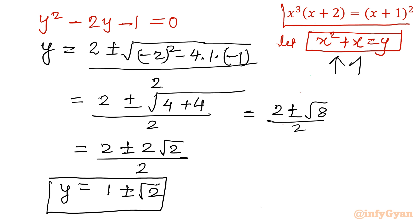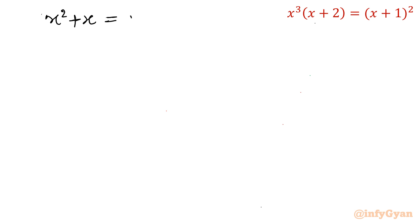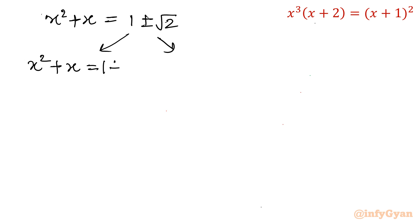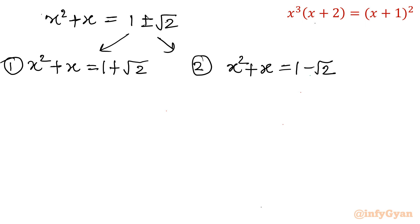Now remember what our y is — y is our substitution x² + x. So in place of y I will put x² + x, and that value is 1 plus minus root 2. I will split this into two quadratic equations and from there we will get 4 solutions. Equation 1: x² + x equal to 1 plus root 2. Equation 2: x² + x equal to 1 minus root 2.